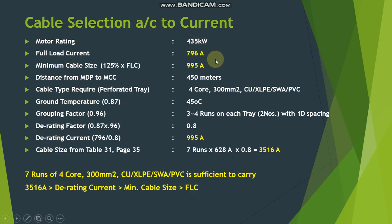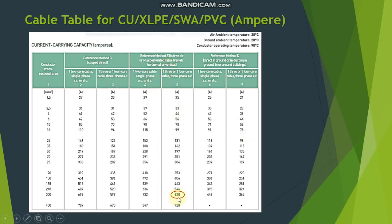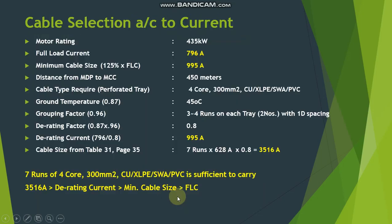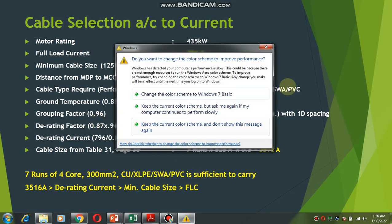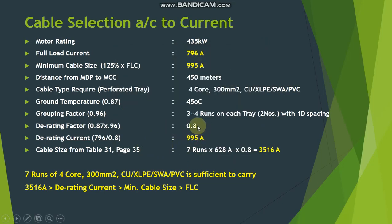Finally, we verify cable selection according to current. Using seven runs of 4-core 300mm² cable, from the cable table the current rating for a 4-core 300mm² cable is 628 amperes. Multiplying 628 × 7 runs × 0.8 derating factor gives 3516 amperes, which is greater than the derating current of 995 amperes and also greater than the full load current of 796 amperes. Therefore, 4-core 300mm² copper XLPE armored cable is absolutely suitable under these conditions.